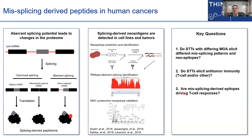The extension of this phenomenon is to ask whether STTs can exacerbate this misplicing and thus unveil novel or more abundant accumulation of altered proteins and neoantigens. In the study by the Bradley and Abdel-Wahab teams, they began to address this important challenge by exploring three key questions: first, do STTs with very different mechanisms of action elicit different patterns of misplicing and potentially different repertoires of neoepitopes? Second, do these STTs elicit T-cell responses or any other elements of anti-tumor immunity? And lastly, is there any evidence of T-cells responding to such putative neoepitopes in the context of STT treatment?